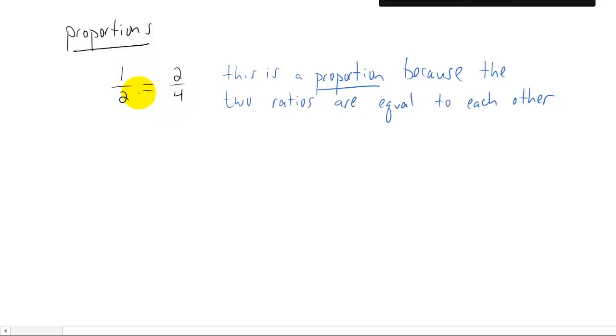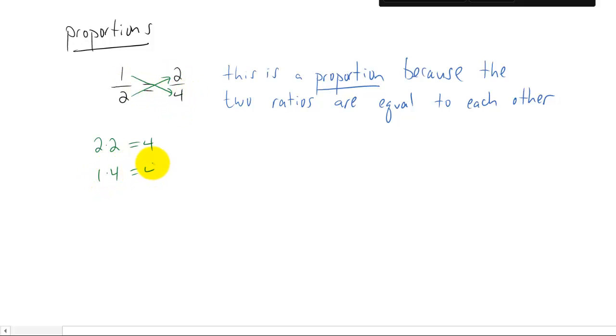Well, what you can do is you can actually find the cross products of this ratio. If you multiply these two numbers here, you have 2 times 2, that equals 4. And if you multiply these two numbers, that's 1 times 4, that equals 4. So what we can say is, if the cross products are the same, then the ratios are equal to each other and we have ourselves a proportion.